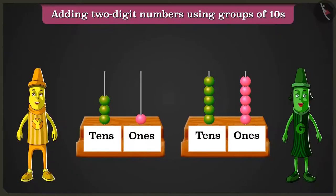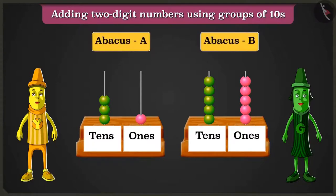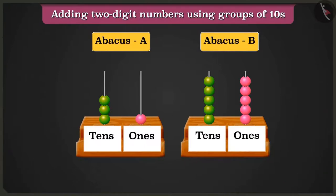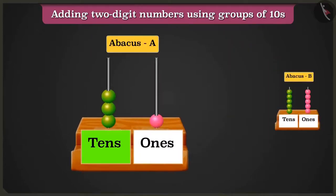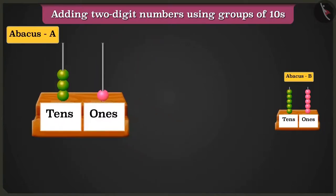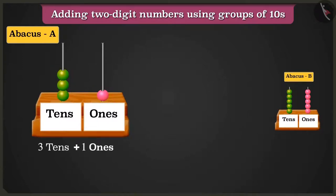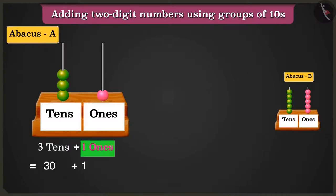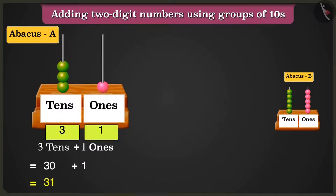Well done, Greeny! Hey Yellow, what is this? That is an abacus. Let us look at another example. In abacus A, the box of tens has three beads and the box of ones has only one bead. So abacus A has three tens and one one. Adding three tens, that are thirty, and one one, that is one, will be equal to thirty-one.